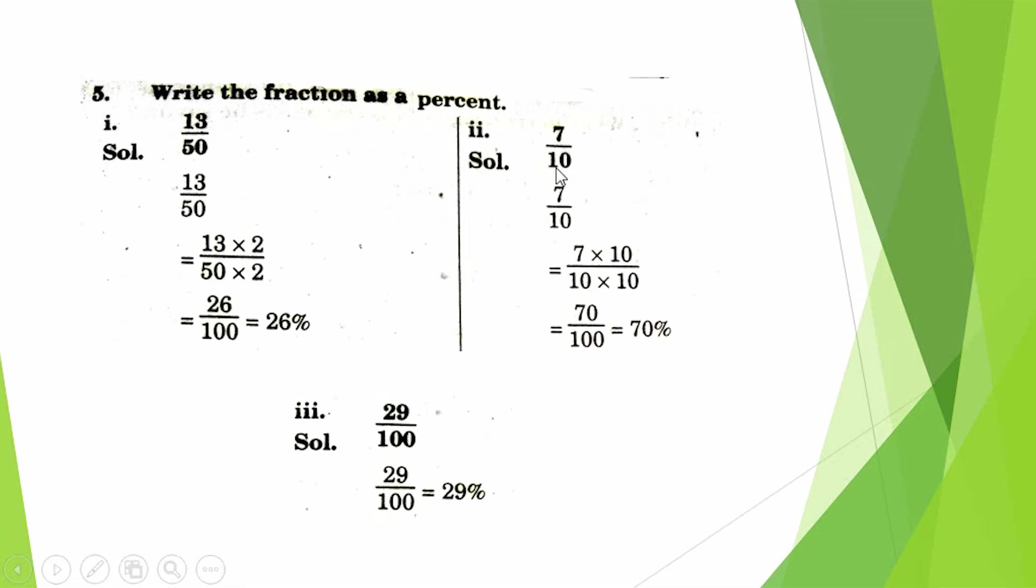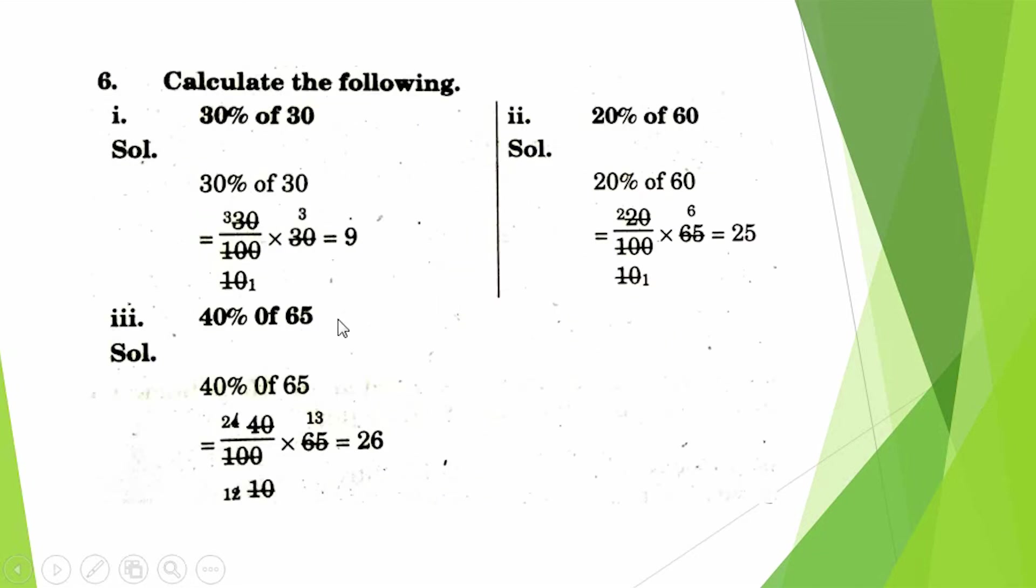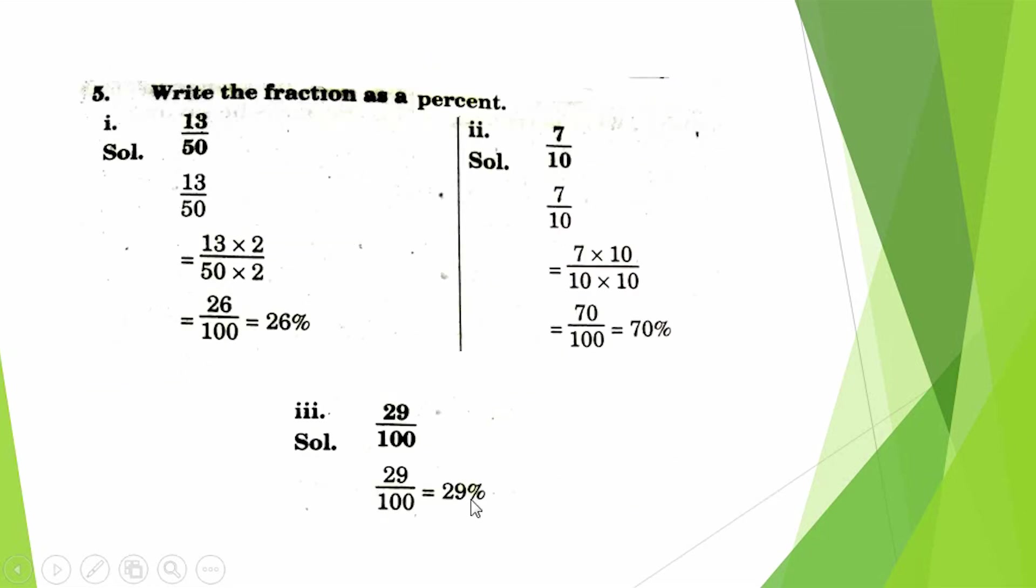7/10. When we multiply 10 by 10, the denominator becomes 100. Therefore, we multiply 10 in denominator and numerator. The numerator becomes 70 and denominator becomes 100. Therefore, 70%. 29/100. There is already 100. Therefore, we convert to percentage: 29%.